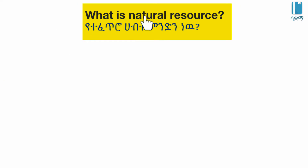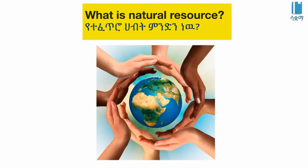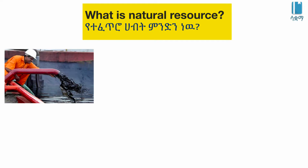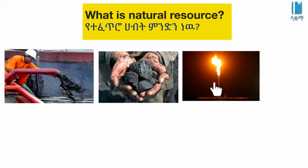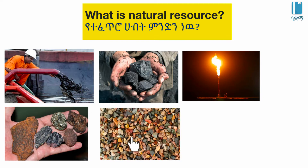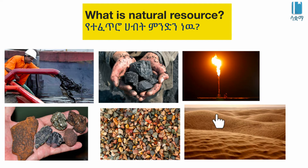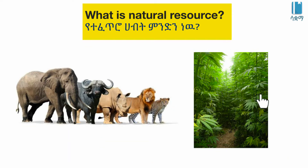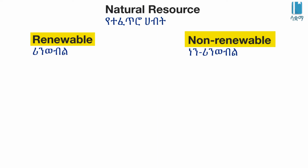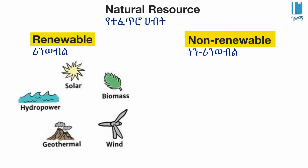What is a natural resource? A natural resource includes things like oil, coal, natural gas, and metal. Natural resources can be renewable.